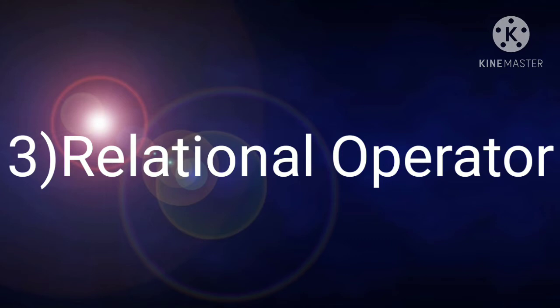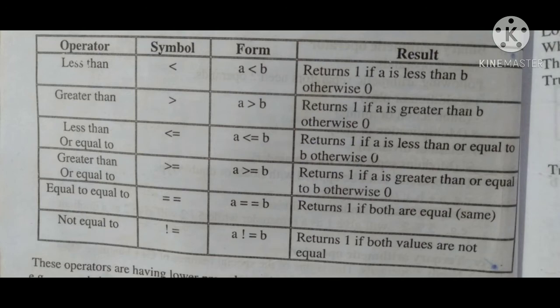The relational operators table has four columns: operator, symbol, form, and result. Less than symbol: form A < B — returns 1 if A is less than B, otherwise 0. Greater than symbol: form A > B — returns 1 if A is greater than B, otherwise 0.